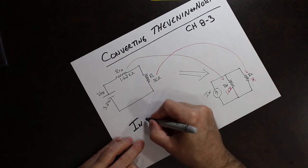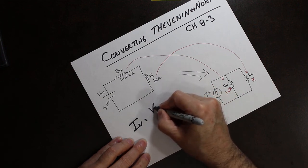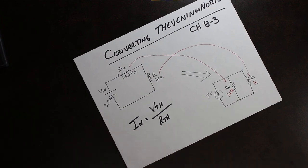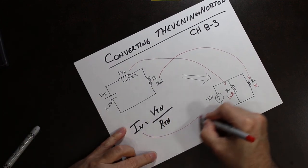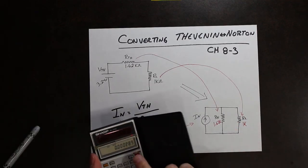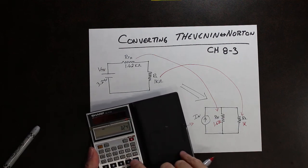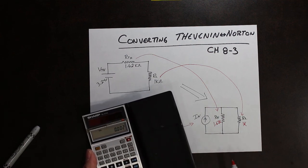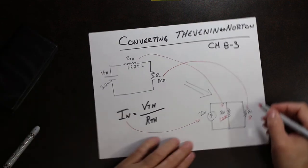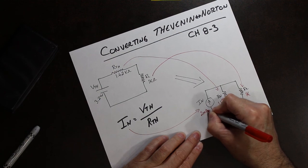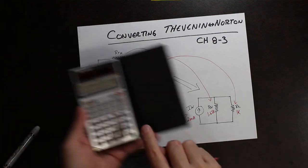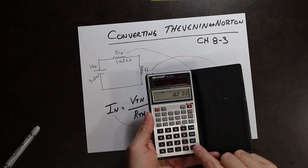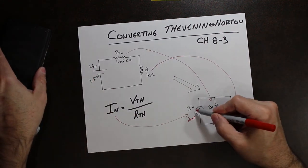Norton's current is equal to Thevenin's voltage divided by Thevenin's resistance. In this particular case, we take 3.24 volts divided by 1.62kΩ and we end up with 2 milliamps. So I_Norton in this case is 2 milliamps. We're taking V_Thevenin of 3.24V and dividing it by R_Thevenin of 1.62kΩ, which equals 2 milliamps.